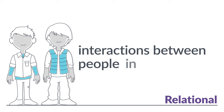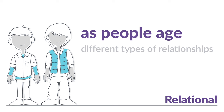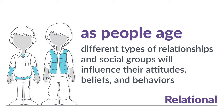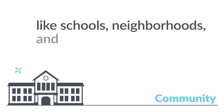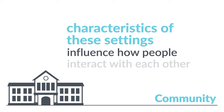As people age, different types of relationships and social groups will influence their attitudes, beliefs, and behaviors. The community level includes settings or institutions outside the home, like schools, neighborhoods, and workplaces, where social relationships take place. The characteristics of these settings influence how people interact with each other.